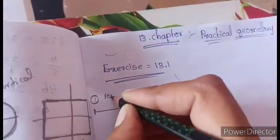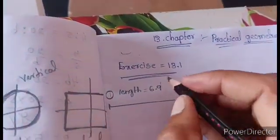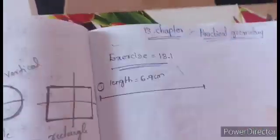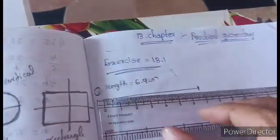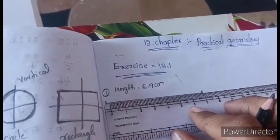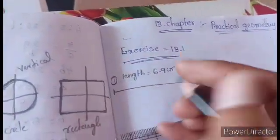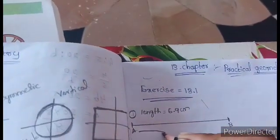I will show you how much length — I will show you 6.9 cm length using scale and compass. I will show you exactly 0 to 6.9 cm on the scale, marking points A and B. The total length shown is 6.9 cm.